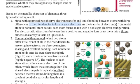Once those ions are formed, we have very strong electrostatic attraction between the cations and the anions, which then forms the ionic compound. That interaction between the cations and anions is what we call an ionic bond.